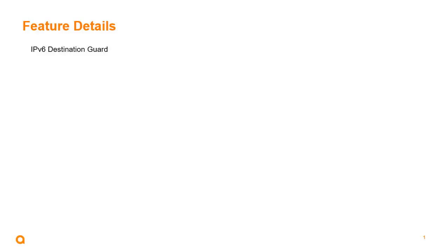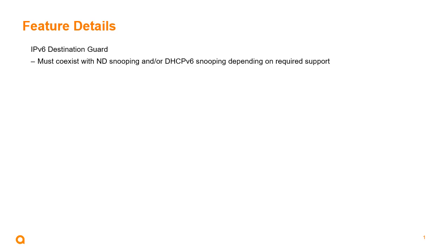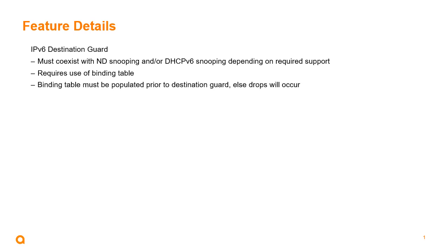Let's cover the salient features of IPv6 Destination Guard. Destination Guard must co-exist with ND snooping and/or DHCPv6 snooping to be effective, depending on what you're using in your v6 network. Destination Guard requires the use of the binding table that was populated by either ND snooping or DHCPv6 snooping. The binding table must be populated prior to switching on Destination Guard, else drops will occur.